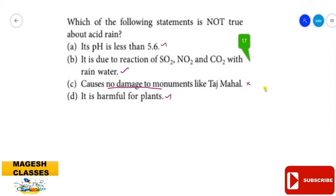Acid rain is harmful for plants, and its pH is less than 5.6. Acid rain does cause damage to buildings made of marble or limestone. The Taj Mahal is made of marble, which is calcium carbonate. Acids like sulfuric acid react with calcium carbonate to form calcium sulfate, corroding the structure. The answer is C.